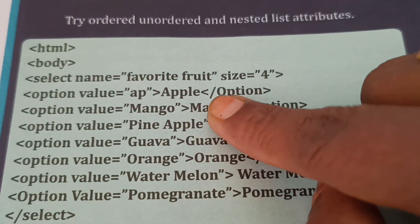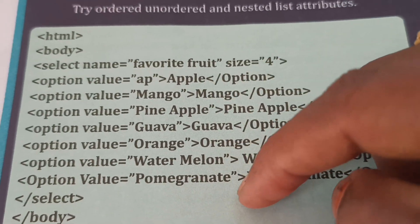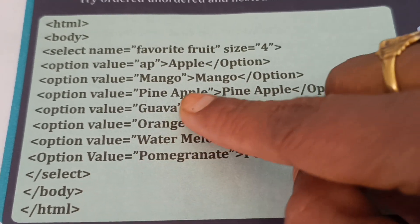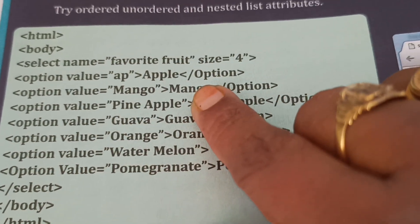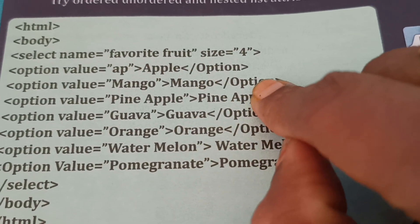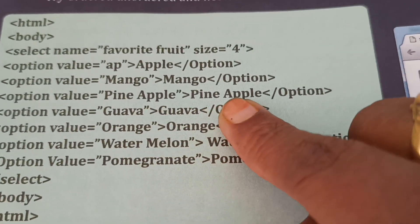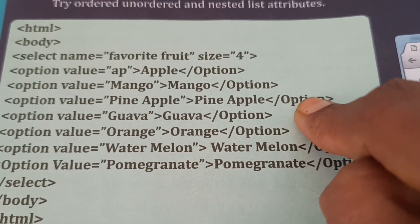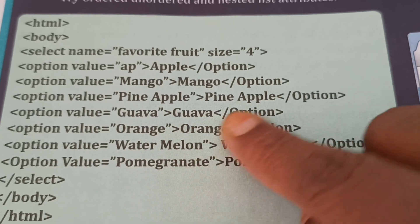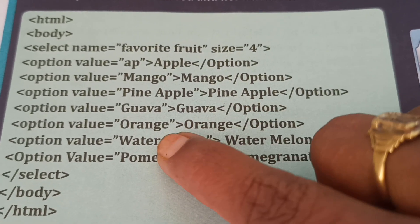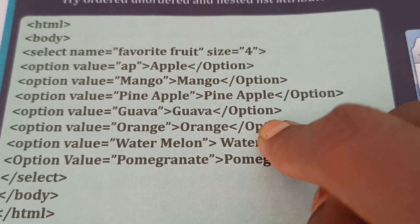Option opening bracket, here closing bracket - complete this option value. Option value mango, mango, option closing bracket. Pineapple, option value, again pineapple, option closing bracket. Guava, opening bracket, closing bracket, option values. Orange option value, opening bracket, closing bracket.